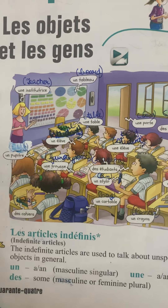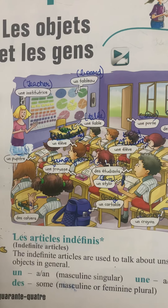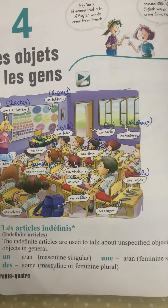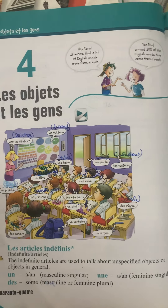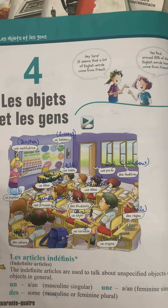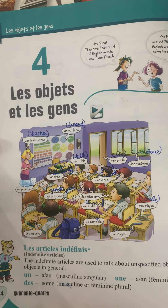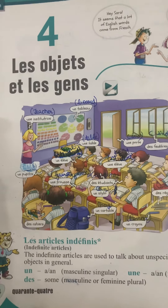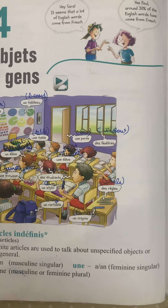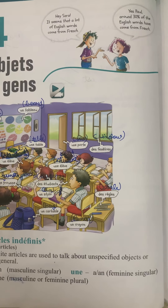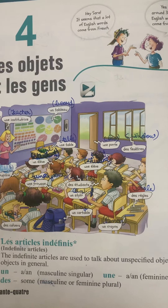Now we are going to study the next topic: articles. Indefinite articles — Les articles indéfinis. Indefinite articles are used to talk about unspecified objects or objects in general. The non-living things which we have studied right now are examples of indefinite articles. Un means 'a' or 'an' and is used with masculine singular. Une also means 'a' or 'an' and is used with feminine singular. Des means 'some' and is used with masculine or feminine plural.